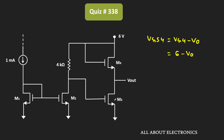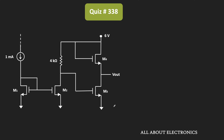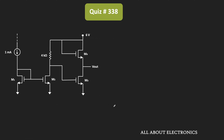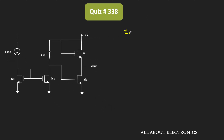Since M3 and M4 are connected in series, the drain current of these two MOSFETs will also be equal. Additionally, since all MOSFETs are operating in the saturation region, the drain current ID in saturation can be expressed as: ID = (1/2) × μn × Cox × (W/L) × (VGS − Vt)².